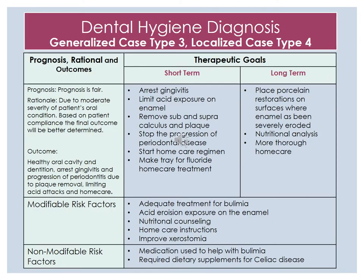Here we present Kim's dental hygiene diagnosis. She is a generalized case type 3 and a localized case type 4. Her prognosis is fair. The rationale for this is due to the moderate severity of her oral condition, and the final outcome will be determined based on the patient's compliance. The outcome is to have a healthy oral cavity and dentition. We want to arrest the gingivitis and progression of periodontitis through plaque removal, limiting acid attacks, and oral home care.